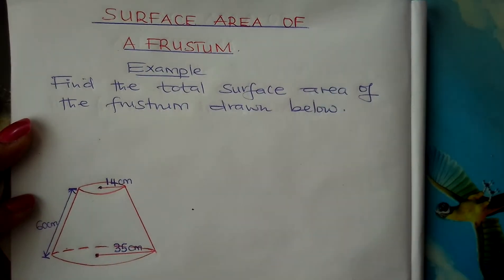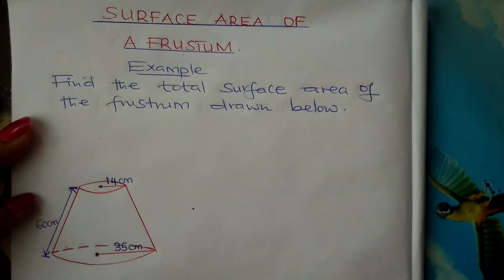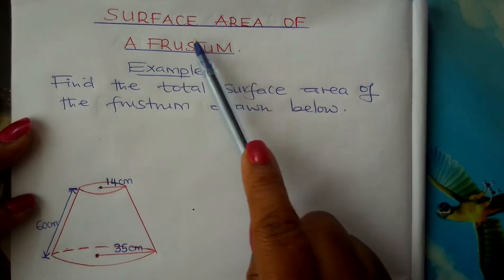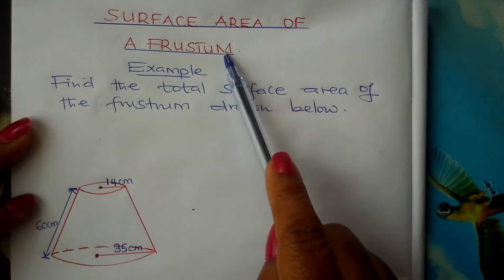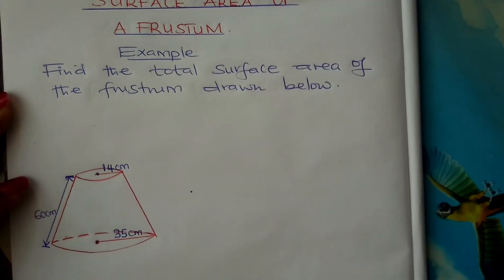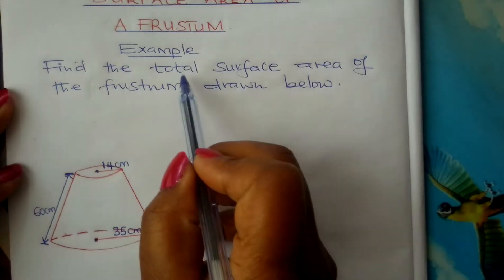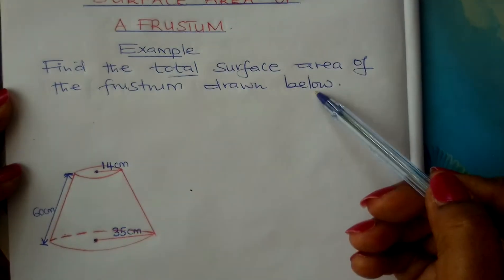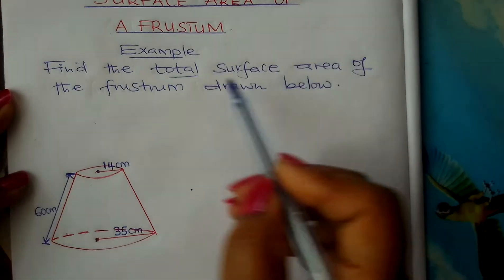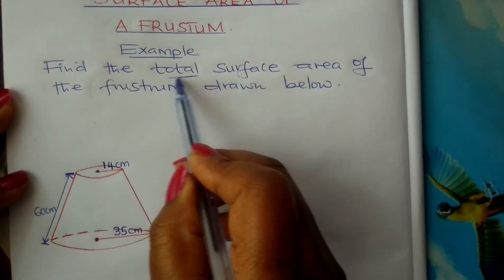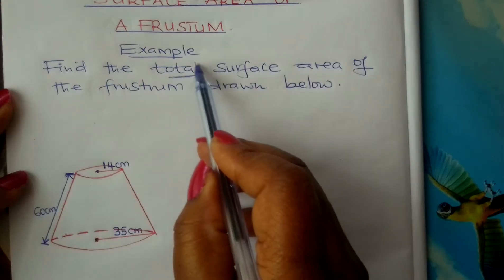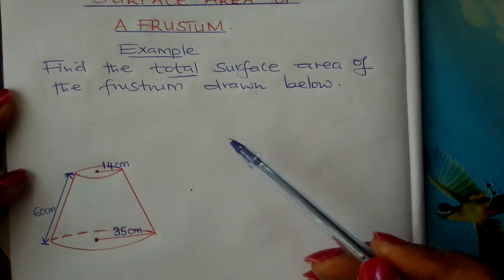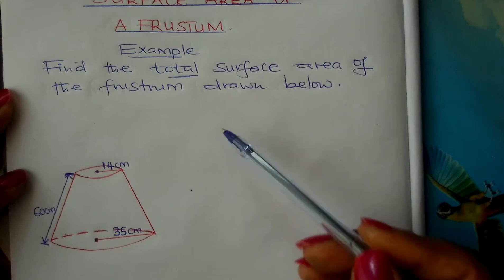Welcome learners to Form 2 Mathematics. We are looking at surface area of a frustum. Let us look at this example: find the total surface area of the frustum drawn below. When you hear of total surface area, it simply means you find the area of all the surfaces and then add them.